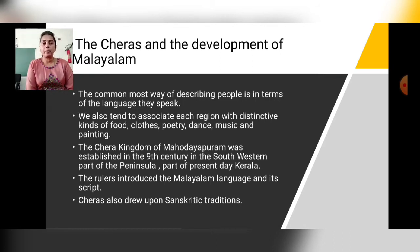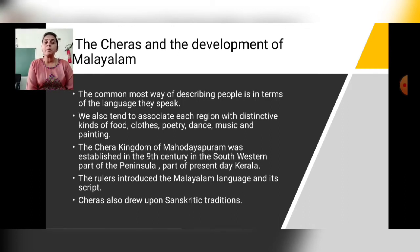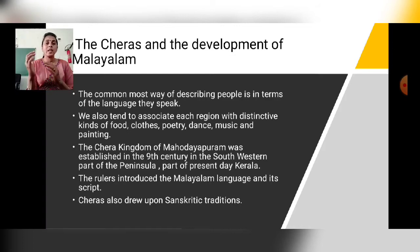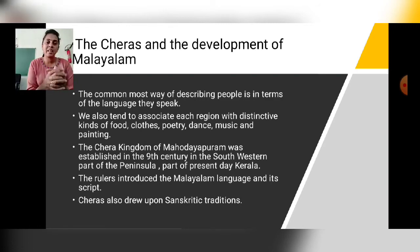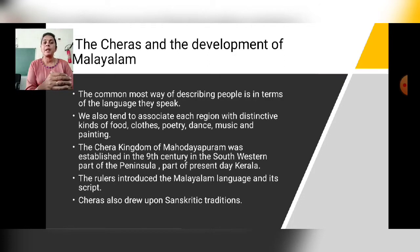The Chera Kingdom of Mahodayapuram was established in the ninth century in the south-western part of the peninsula. It is the part of present-day Kerala. The Chera kingdom had Mahodayapuram as their capital. The rulers introduced Malayalam as the language in their script — while writing, they used Malayalam.